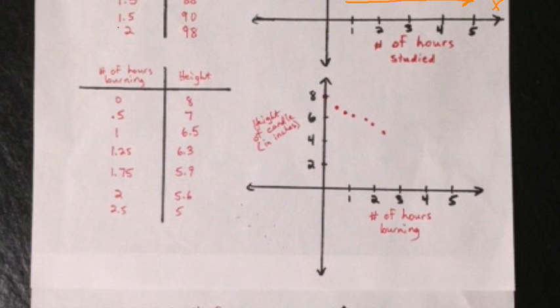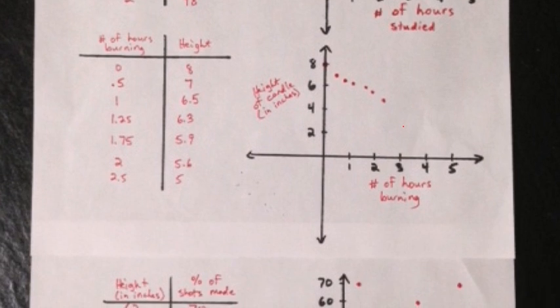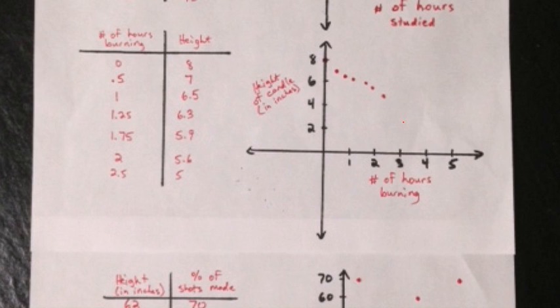Let's look at a second example. In this example, I'm comparing the number of hours that a candle is burning to its height. For example, after zero hours — before the candle is even lit — its height is eight inches. Just for the sake of time, I've already plotted these ordered pairs on the coordinate plane.